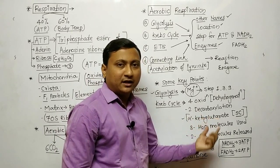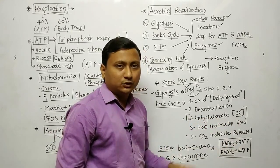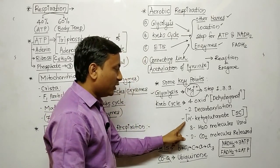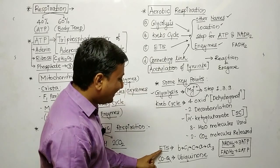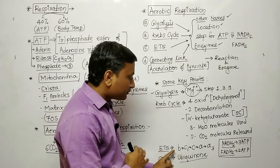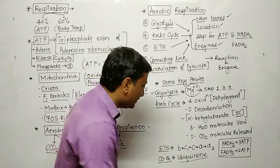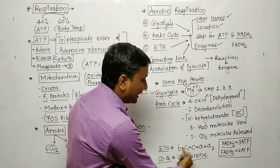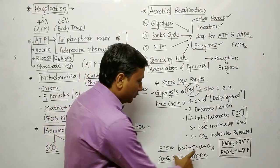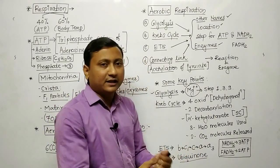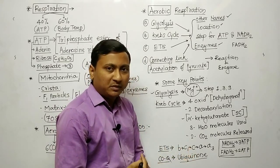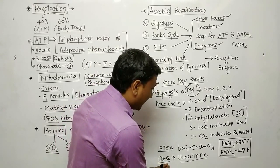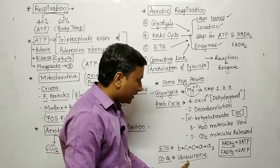In the Krebs cycle, alpha-ketoglutarate is the only compound which contains 5 carbon atoms — this is a special point to prepare. In the ETS, the cytochrome sequence is: B, C1, C, A, and A3. If a question gives a shuffled sequence, you must know the correct order: B, C1, C, A, A3. There is also Coenzyme Q, whose other name is ubiquinone.